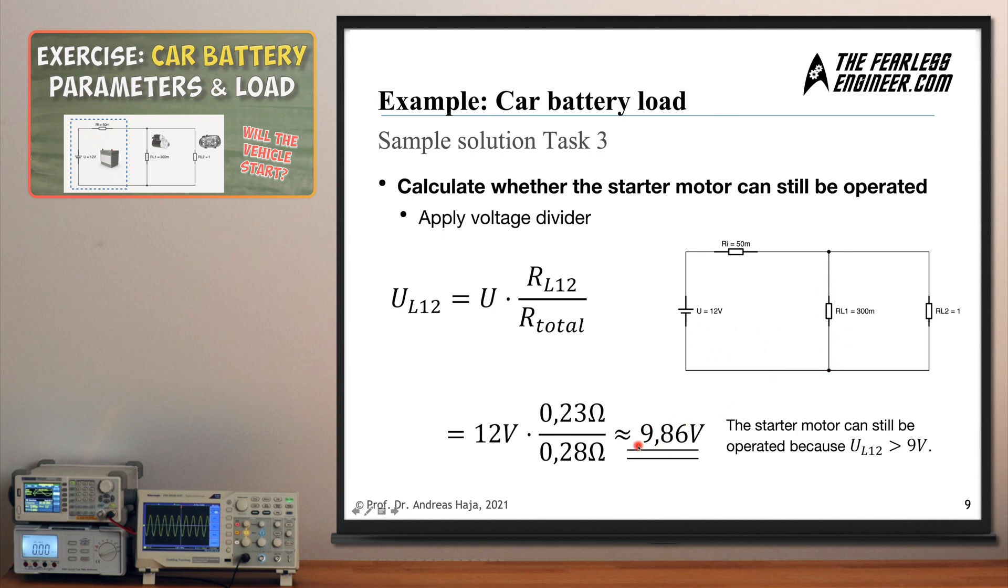And as both resistors have the same voltage drop across them due to the fact that they share the upper and the lower junction point, we can say that the starter motor under these conditions can still be operated, so the answer is yes, because this voltage which we have computed here is above this threshold of 9 volts, so the car is going to start out if these conditions are met. That's all for now, if you have any questions regarding the content of this video please drop me a comment down below, and now I wish you a nice day, see you next time here on The Fearless Engineer.